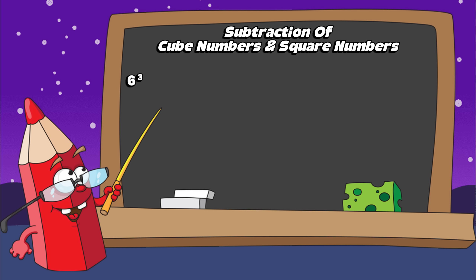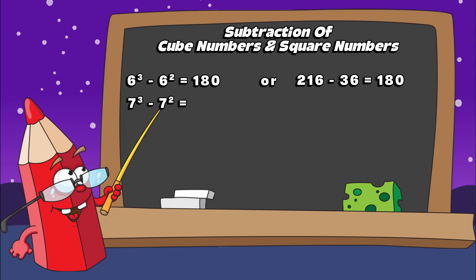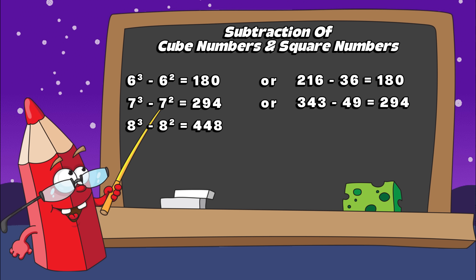Six cubed minus six squared equals one hundred and eighty. Or two hundred and sixteen minus thirty-six equals one hundred and eighty. Seven cubed minus seven squared equals two hundred and ninety-four. Or three hundred and forty-three minus forty-nine equals two hundred and ninety-four. Eight cubed minus eight squared equals four hundred and forty-eight. Or five hundred and twelve minus sixty-four equals six hundred and forty-eight. Nine cubed minus nine squared equals six hundred and forty-eight.